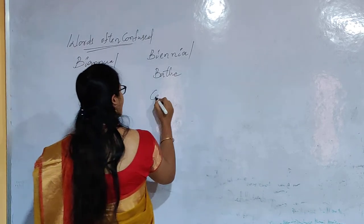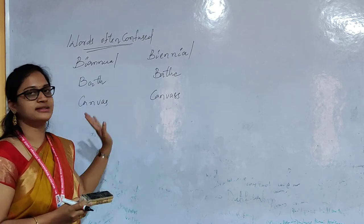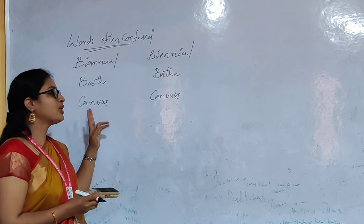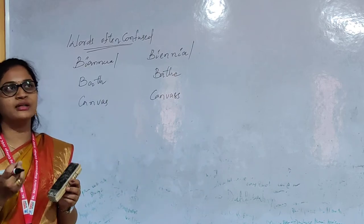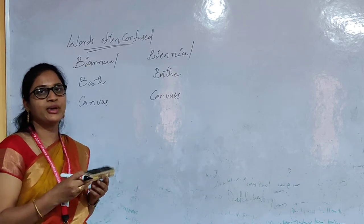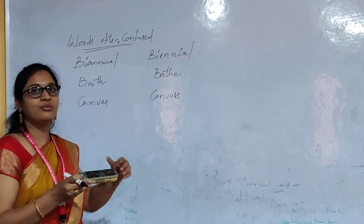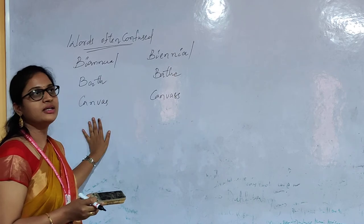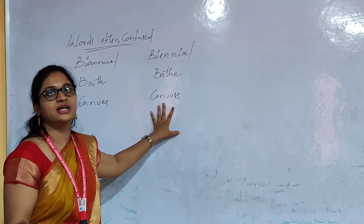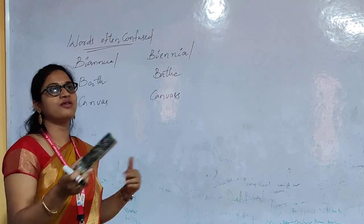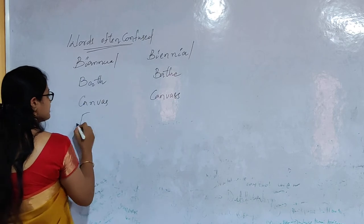The next word is 'canvas' and 'canvass'. The main difference is single 's' versus double 's'. 'Canvas' (single s) is a type of cloth where artistic work is done — painters do their artistic work on canvas cloth, and embroidery work as well. 'Canvass' (double s) means canvassing — asking for support. Politically, politicians go and ask for support, and that is called canvassing.